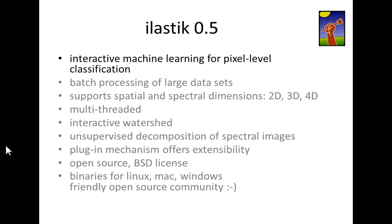At the heart of version 0.5 is the interactive training of a pixel-level classifier. After training, the classifier can be used to batch process very large numbers of images. Images can have two or three spatial dimensions plus a spectral dimension.